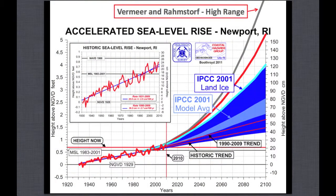Locally, what does that look like? Using the same Newport tide gauge figure extrapolated out: if you follow the current trend you come out to about here; this is the IPCC 2001 scenario which was better because it accounted for ice; and this is the high range from Vermeer and Rahmstorf, which is way up off the chart.